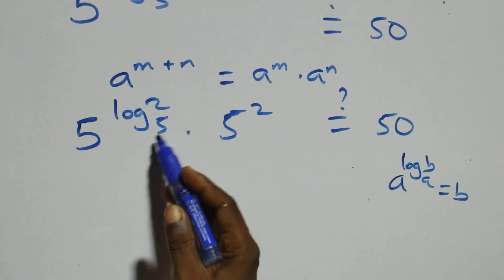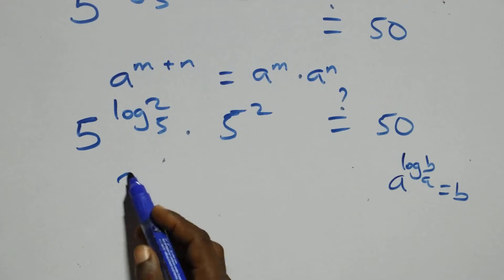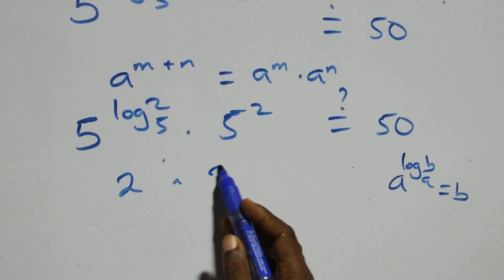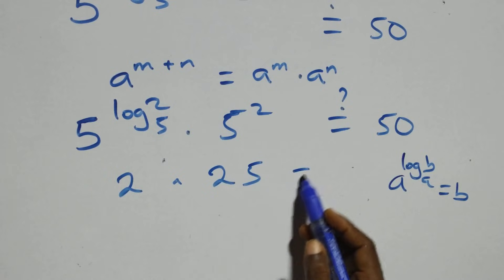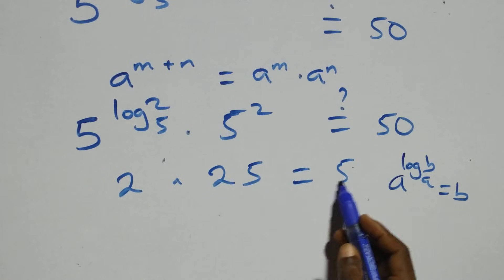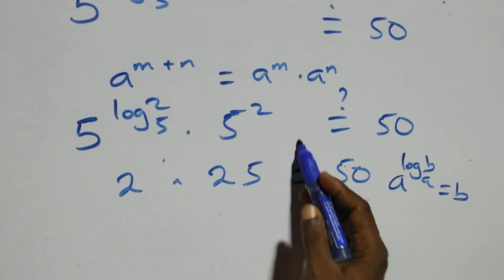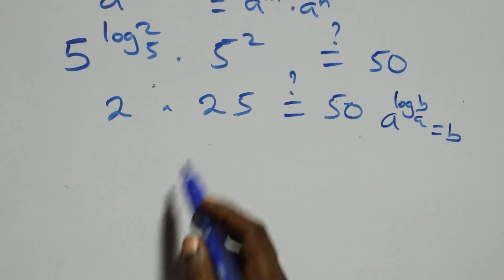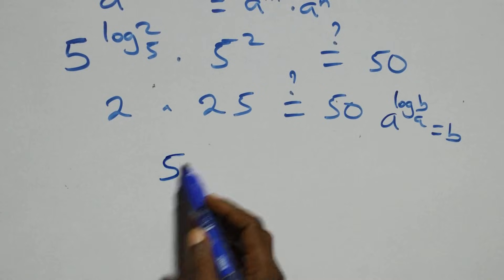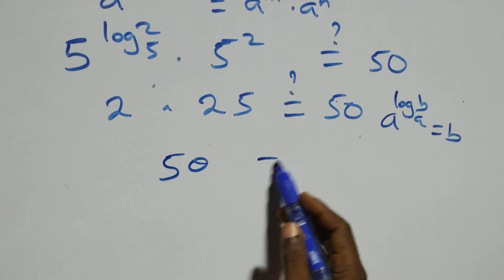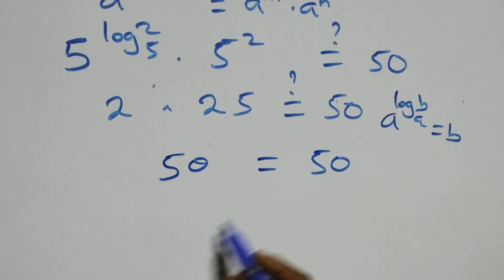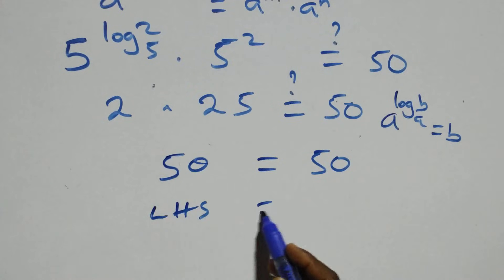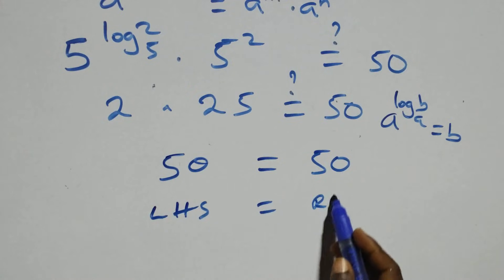So 5 raised to power log₅2 equals 2. And 5 squared is 25. This gives us 2 times 25, which equals 50 — matching the right-hand side. Left-hand side equals right-hand side, confirming the solution.